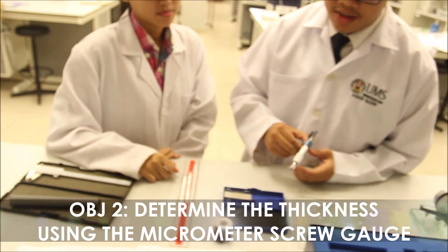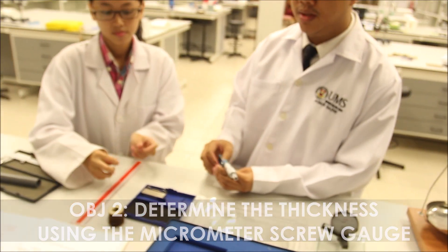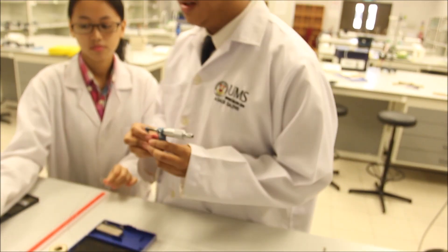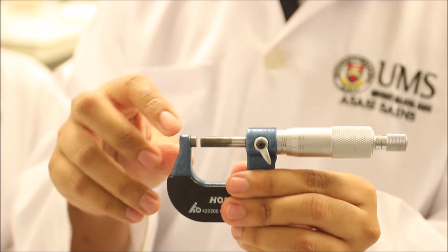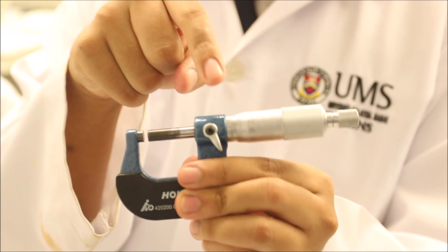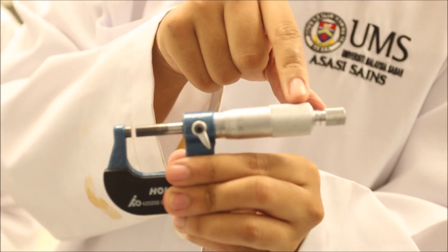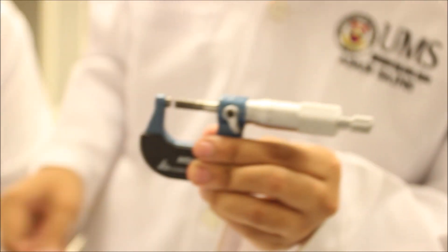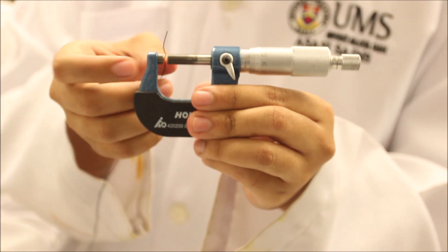The second objective is to determine the thickness of wires, cubes, and coins using micrometer screw gauge. You need to know the parts of micrometer screw gauge first. In this instrument, we have anvil, spindle, main scale, vernier scale, thimble, and ratchet knob.